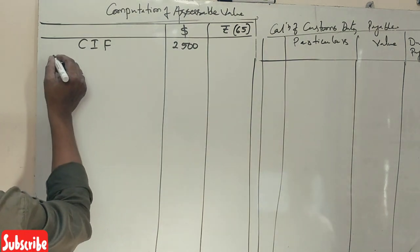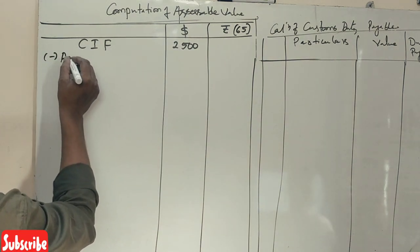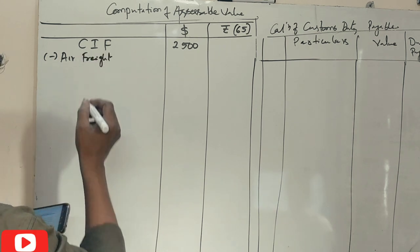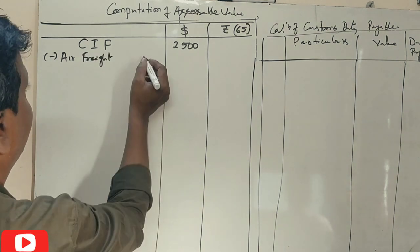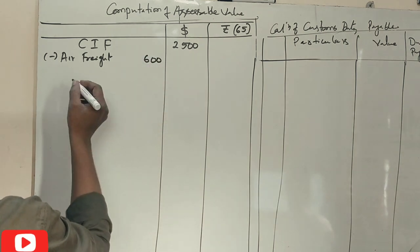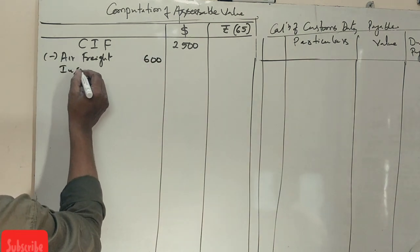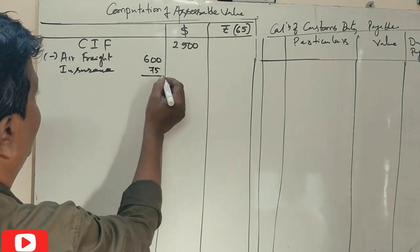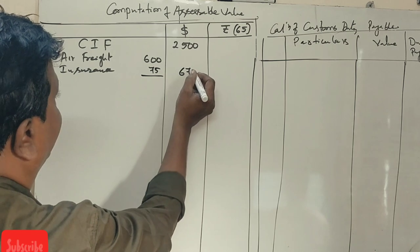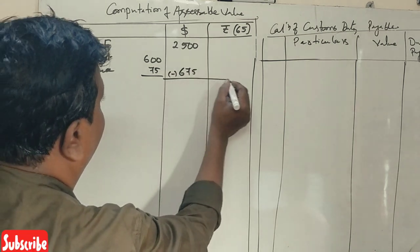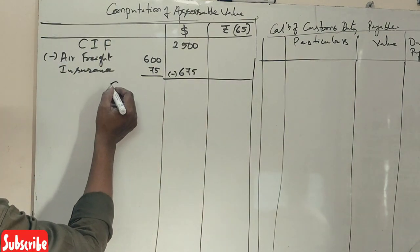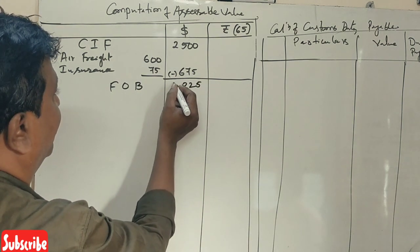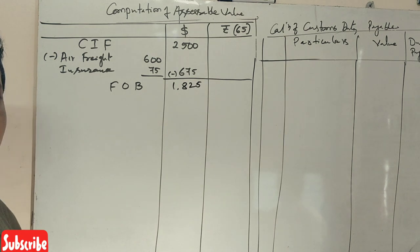CIF value minus air freight ($600) minus insurance ($75) gives a total deduction of $675. So the FOB value works out to $1,825 dollars.